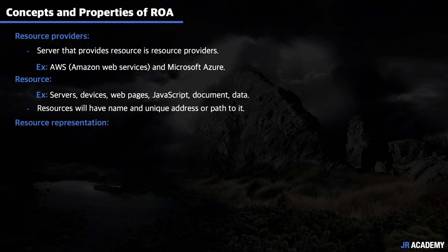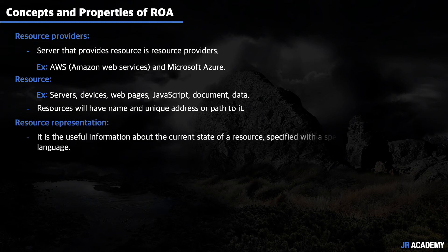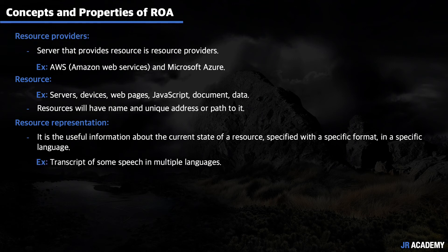Another concept is resource representation, which is the useful information about the current state of the resource, specified in a specific format or language. For example, consider a transcript of a speech as a record available in multiple languages — based on the request, you can serve the transcript in the requested language. The next concept is resource link and connectedness.